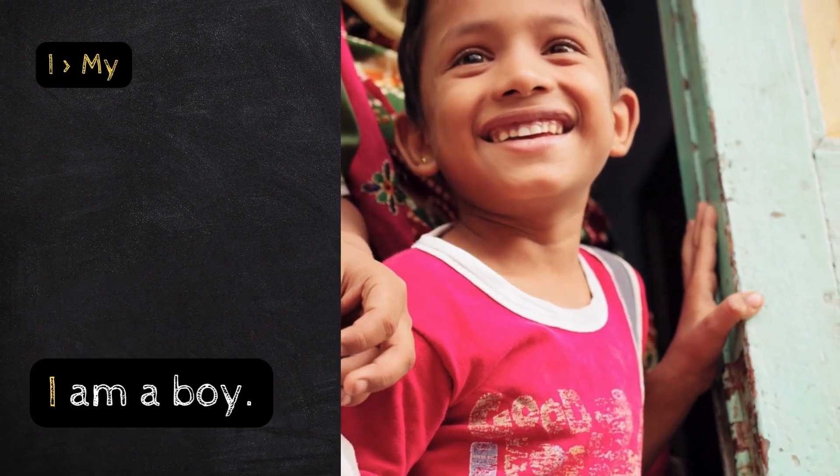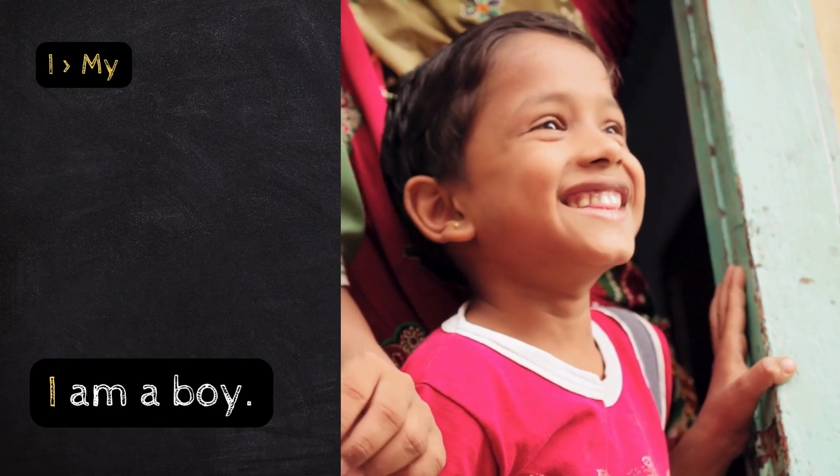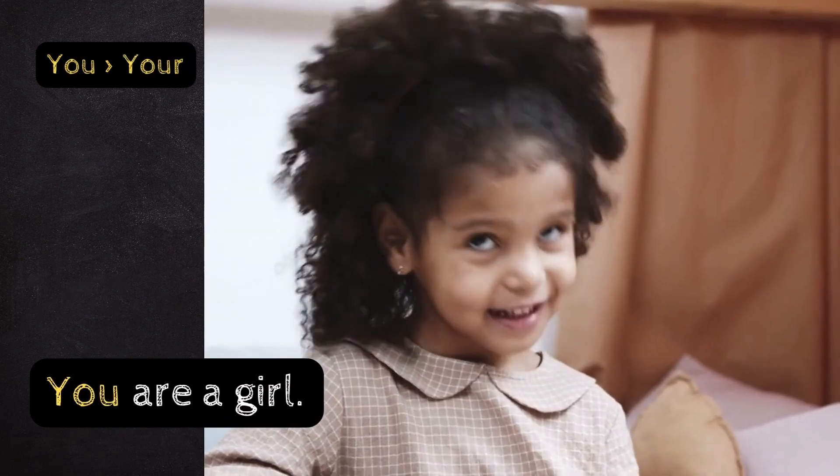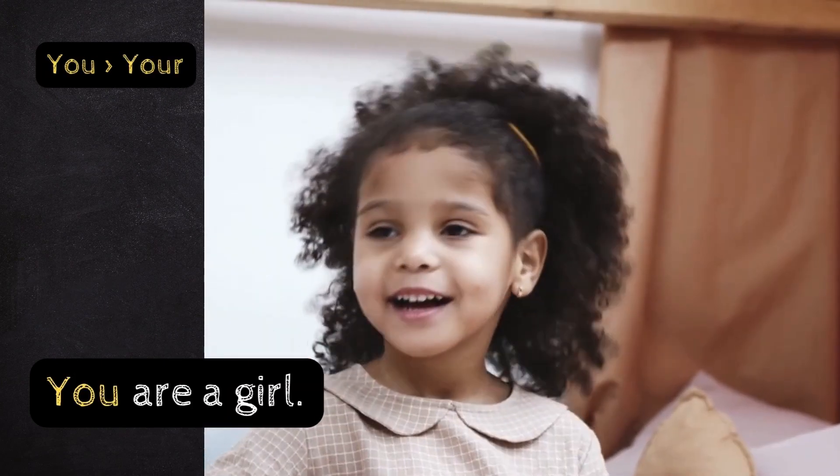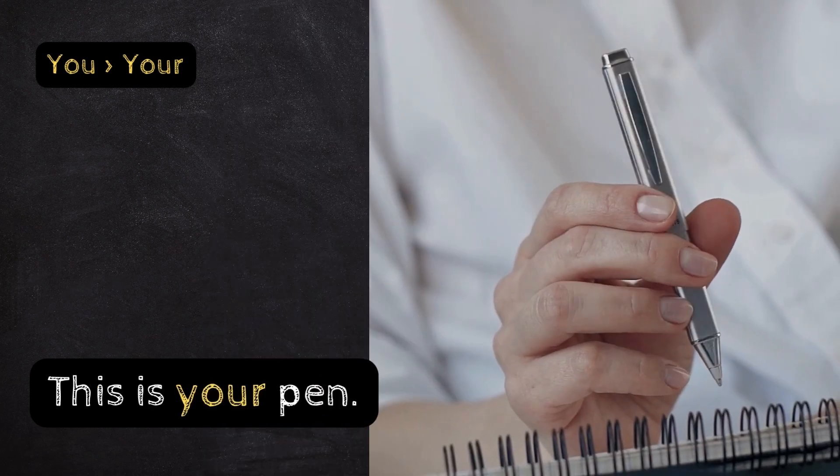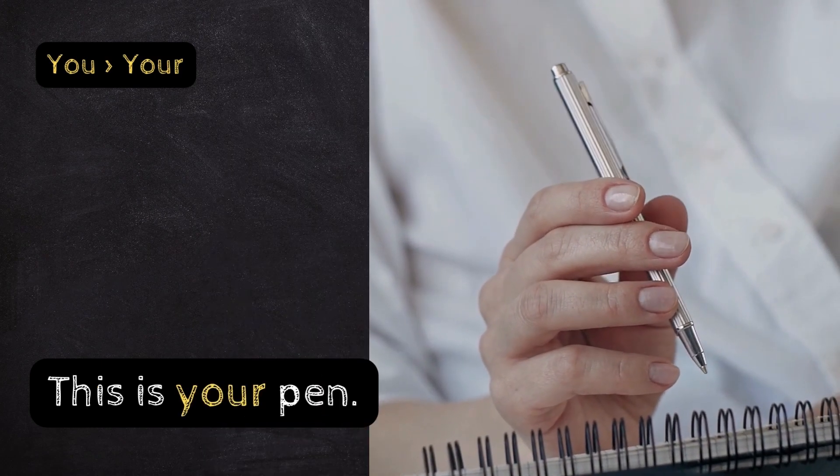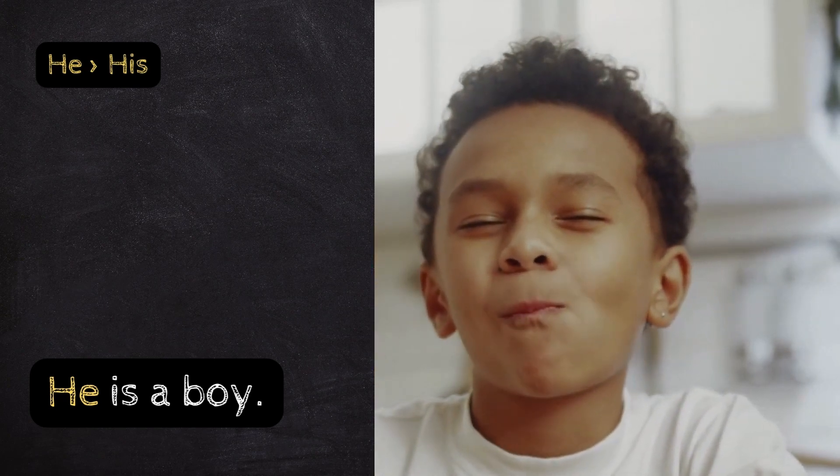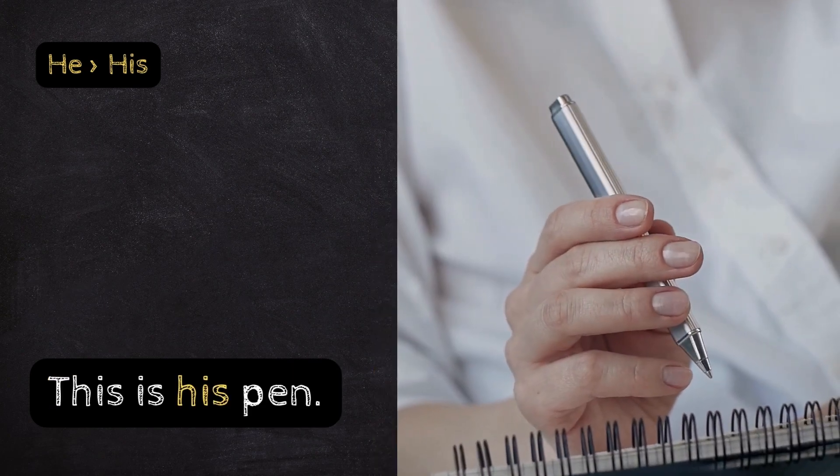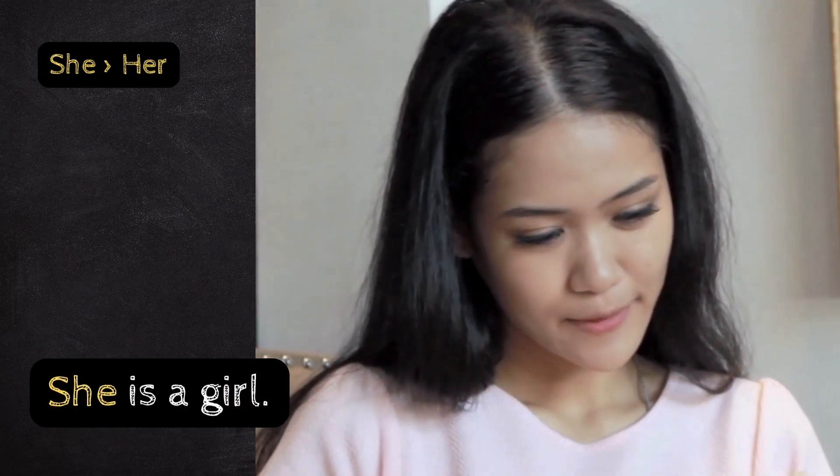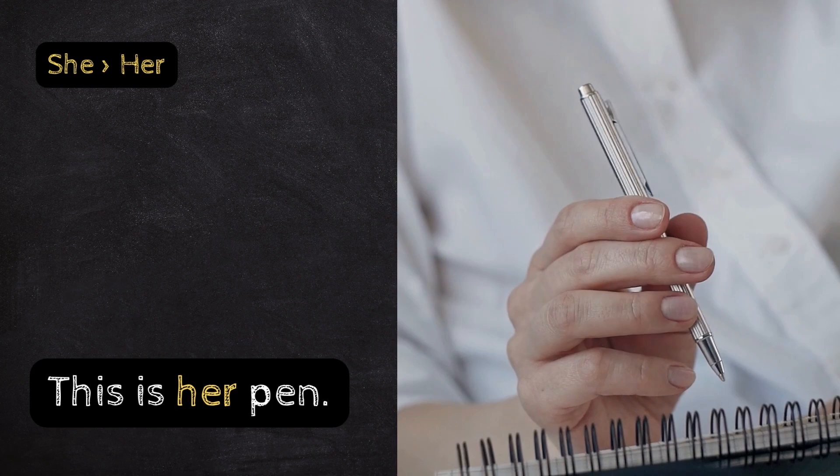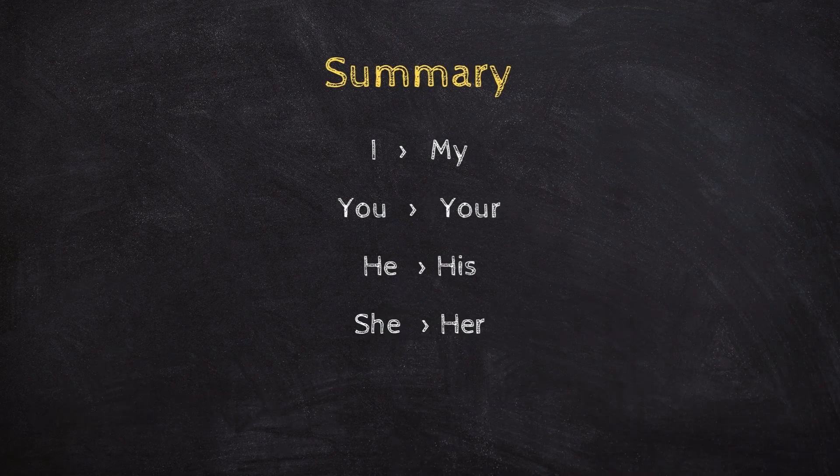Possessive: I - My. I am a boy, this is my pen. You - Your. You are a girl, this is your pen. He - His. He is a boy, this is his pen. She - Her. She is a girl, this is her pen. Summary: I-My, You-Your, He-His, She-Her.